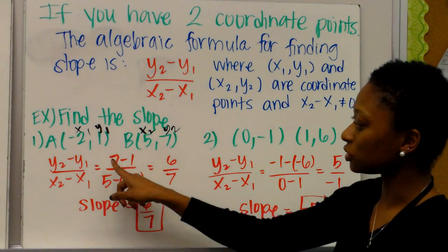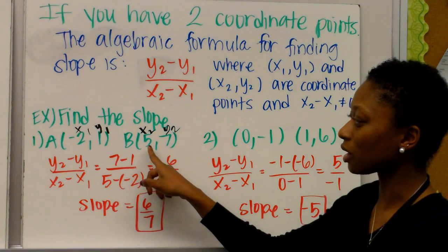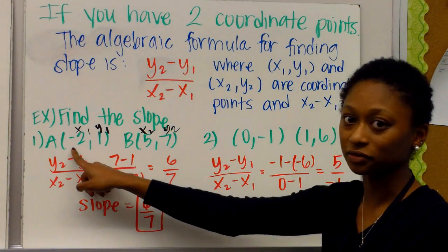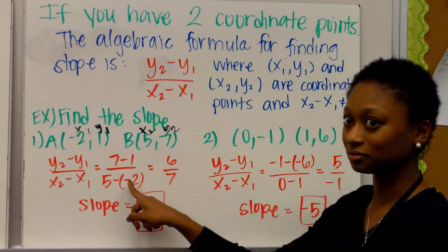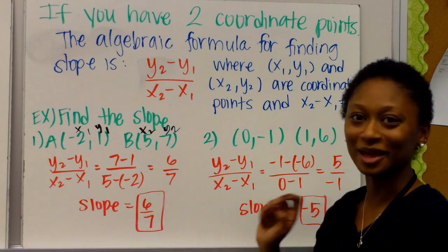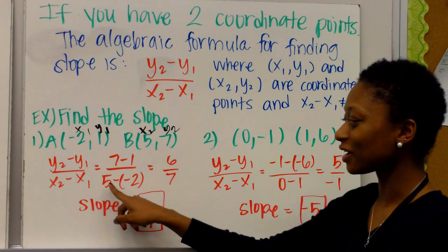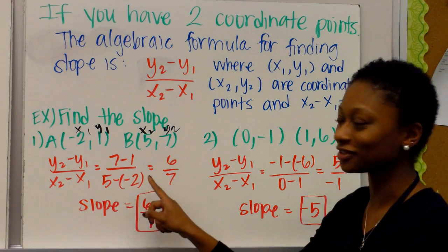and this is x2, and this is x1. So then we need to do 7 minus 1, then we also have to do 5 minus a negative 2. A negative minus a positive is a positive. So 5 minus a negative 2 is 5 plus 2.